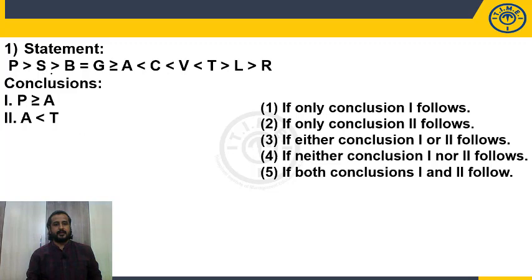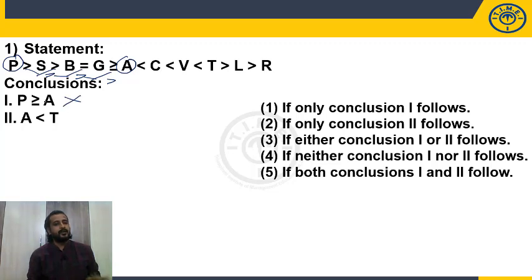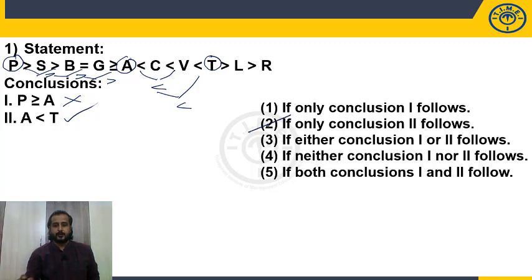Question 1 has a single statement. I focus directly on the conclusions. The first conclusion involves P and A — identify operators between them; they are all less than, same type, so conclusion is definite. The second conclusion involves A and T — less than, less than, less than, less than — all the same operator, so A < T. Only conclusion two follows. The answer is choice 2.